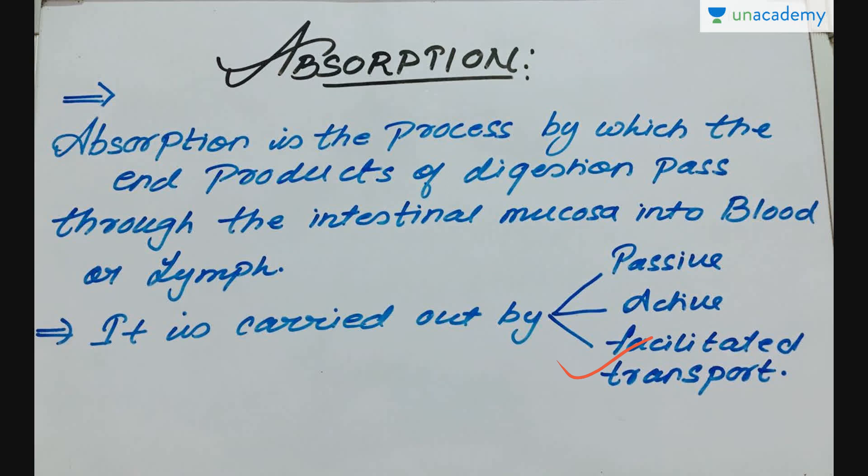In active transport, the movement of molecules occurs across a membrane from a region of lower concentration to a region of higher concentration — in the direction against a gradient or obstruction factor, which is often the concentration gradient. Active transport is usually associated with the use of chemical energy such as ATP, that is adenosine triphosphate.